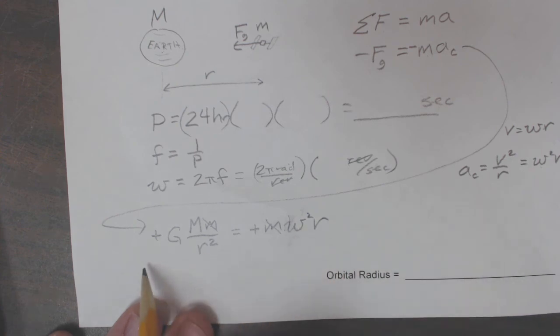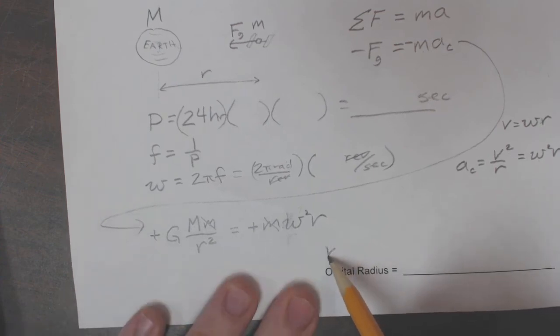It looks like to me that what you can do here is just pull the r's to this side of the equation, pull the ω squared over to this side, and basically solve for r.